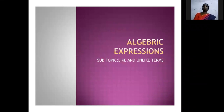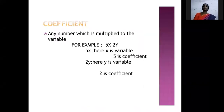The subtopic is like and unlike terms. First, we will discuss what is a coefficient. Any number which is multiplied to the variable is called a coefficient. For example, 5x is one example. In this term, x is a variable and 5 is a coefficient.